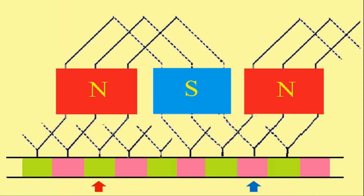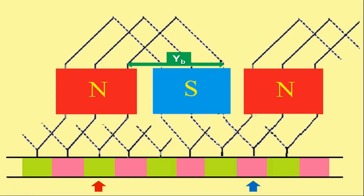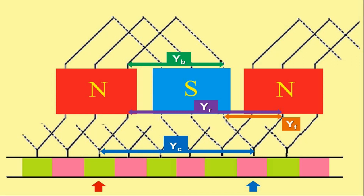In a similar fashion, we may now define the back pitch, front pitch, and resultant pitch of wave winding. The back pitch is the distance between the two sides of a coil connected at the back of the armature. The front pitch is the distance between the second conductor of one coil and the first conductor of the next coil connected to the common commutator segment. The resultant pitch is the distance between the beginning of one coil and the beginning of the next connected coil. And finally, the commutator pitch is the distance between the commutator segments to which the two ends of a coil are connected.